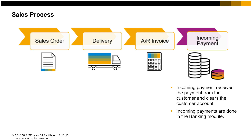Internal reconciliation takes place automatically, and incoming payments are done in the banking module. As part of a streamlined sales process, it is possible to post a payment while creating the invoice. To do this, you choose the payment means icon when you create an invoice and enter the payment amount. This will create an incoming payment due amount that is applied to the invoice you just created.